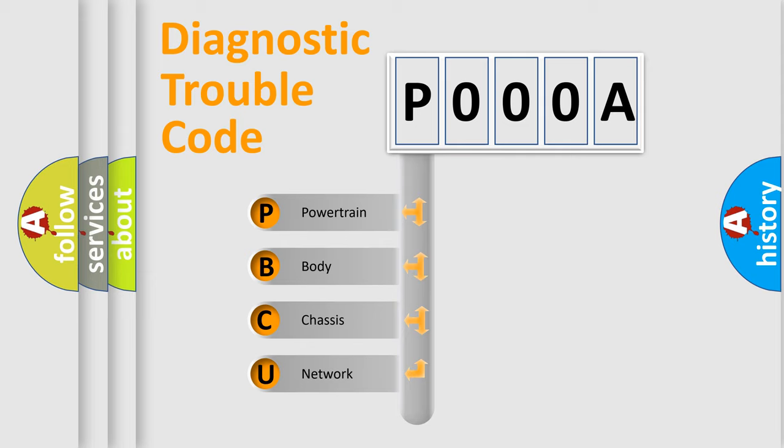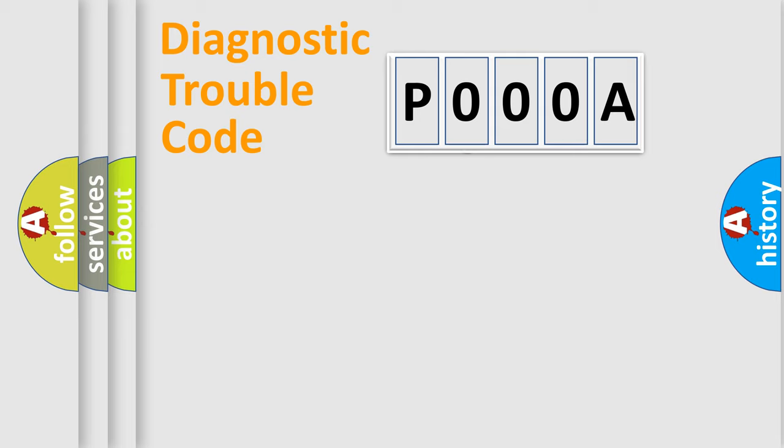We divide the electric system of automobile into the four basic units: Powertrain, Body, Chassis, Network. This distribution is defined in the first character code.